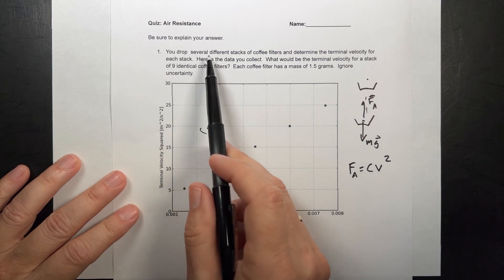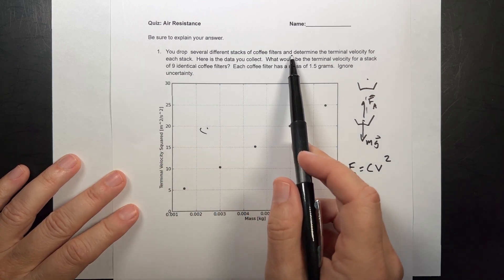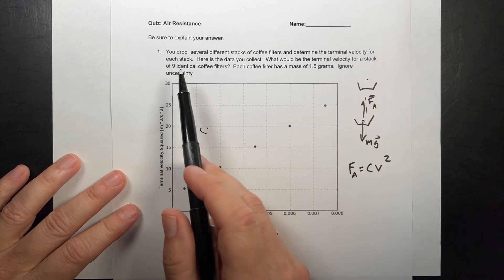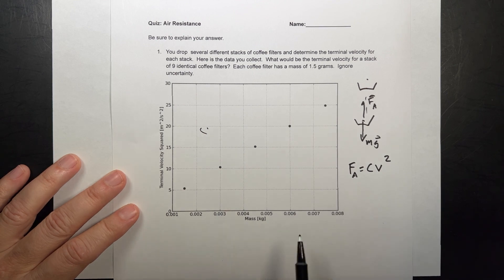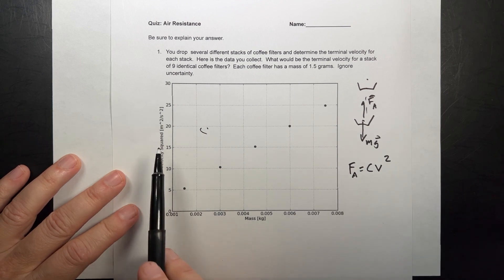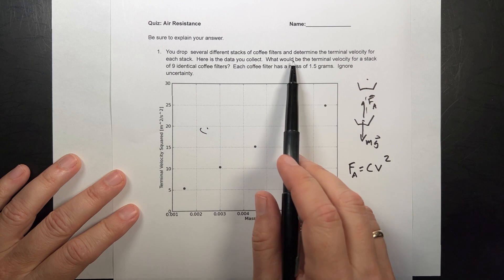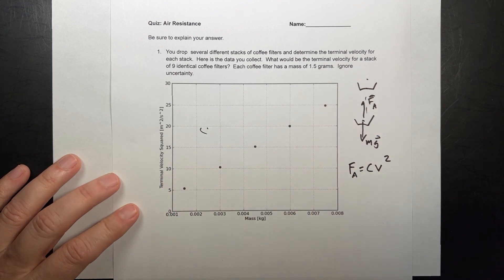So in this case, in this quiz, different stacks of coffee filters are dropped to determine the terminal velocity. So this is the mass of the coffee filters, and this is the terminal velocity squared. What would be the terminal velocity for nine coffee filters?